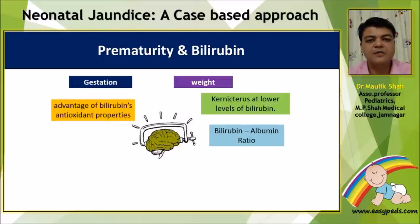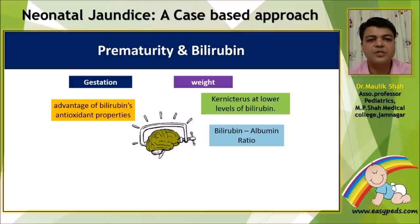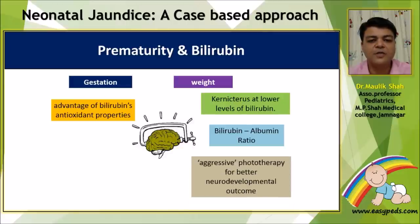On one hand, there is a school of thought that bilirubin is an antioxidant chemical, and its antioxidant properties will be helpful in growth and development of a premature baby. So we must allow bilirubin to rise to a certain level. On the other hand, we are worried that bilirubin toxicity would lead to poor neurodevelopmental outcome. Hence, most NICUs nowadays go for aggressive phototherapy for better neurodevelopmental outcomes in premature babies.